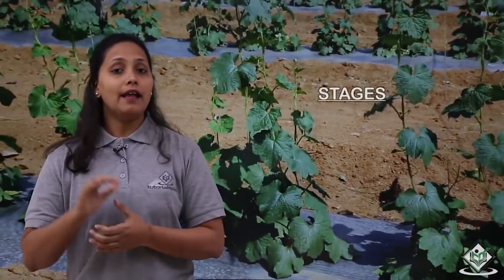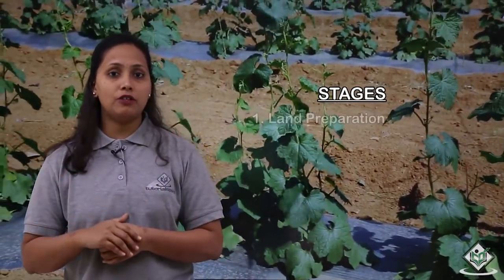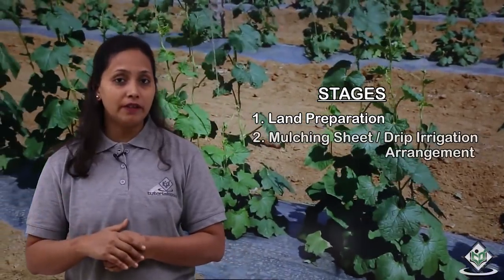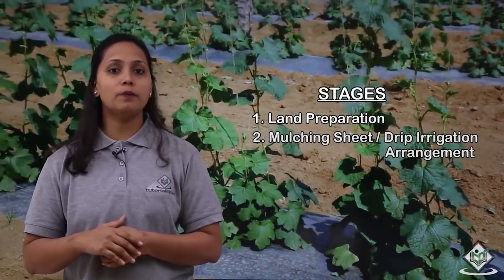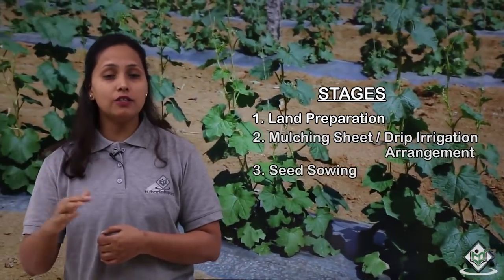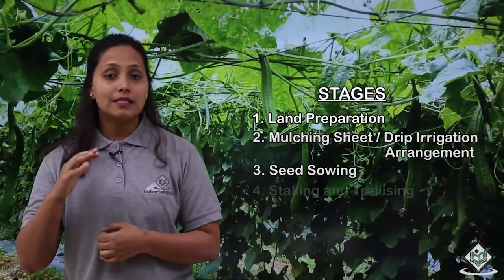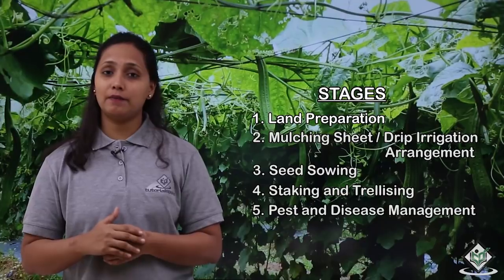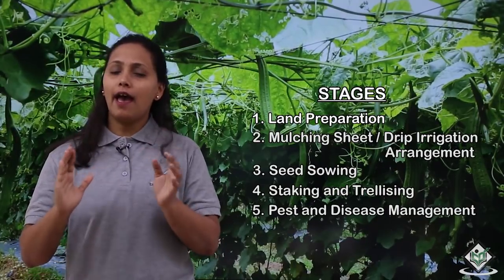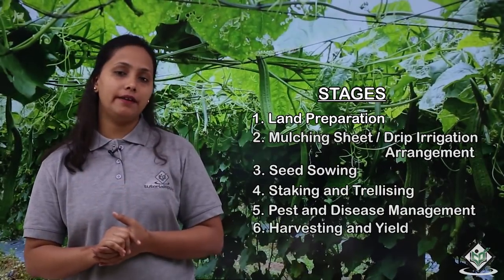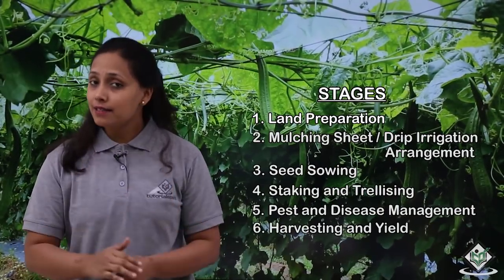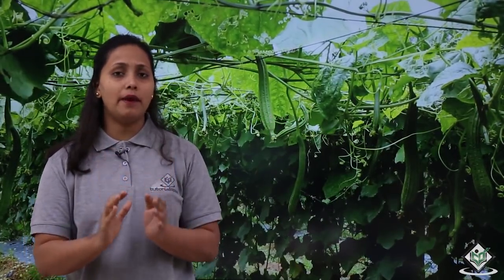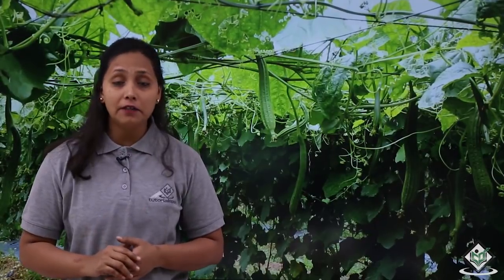Let us now see the stages involved in the cultivation of ridge gourd crop. The stages are: land preparation, mulching sheet and drip irrigation arrangement, seed sowing, staking and trellising, pest and disease management, and harvesting and yield.